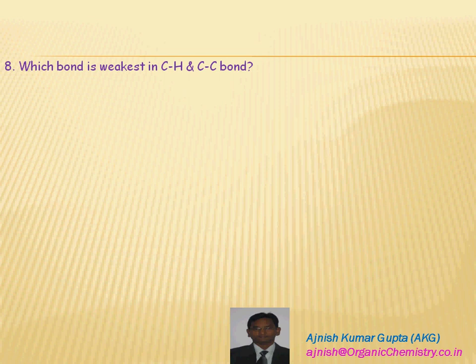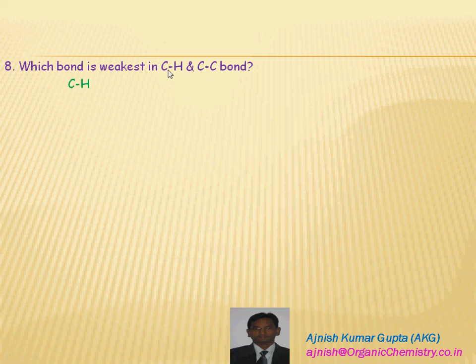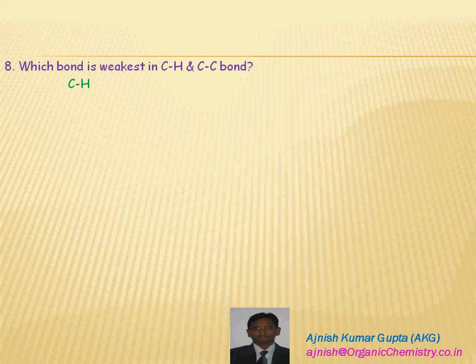Which bond is weaker — carbon-hydrogen or carbon-carbon? In the case of carbon-hydrogen, the overlapping is of 1s-2p orbitals, while in carbon-carbon the overlapping is 2p-2p. Therefore, the weakest bond is carbon-hydrogen. That is why in alkanes, the carbon-hydrogen bond is broken during reactions to give mono-substitution and di-substitution products, whether monochloro, dichloro, or trichloro — not the carbon-carbon bond.